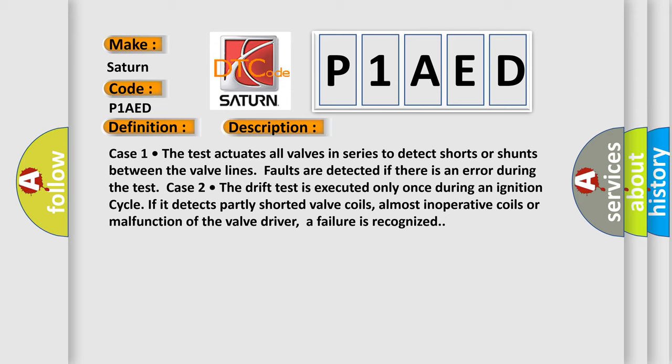Case 2: The drift test is executed only once during an ignition cycle. If it detects partly shorted valve coils, almost inoperative coils or malfunction of the valve driver, a failure is recognized.